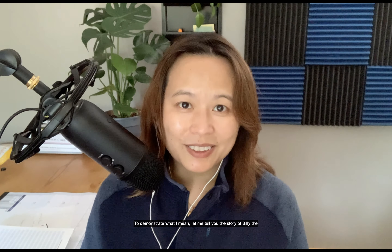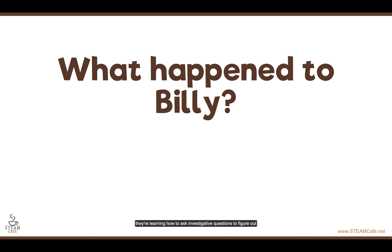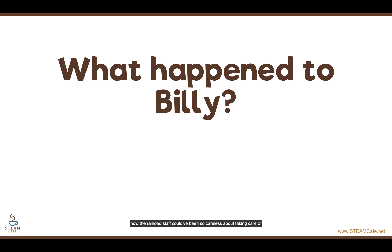I'm going to pause here because some of you are probably going, oh my gosh, what horrible thing happened to such a young kid? But it's not as bad as you think. First of all, this is a great activity to teach kids how to ask questions, which is, incidentally, one of the science and engineering practices. I have a book of lateral thinking puzzles similar to this one where you present a story, then ask your students what happened or why. Their job is to ask questions that I can answer with a yes or no to try and figure out the situation. In other words, they're learning how to ask investigative questions to figure out the context of the puzzle. The puzzle about Billy is like this, and I'm sure some of you are thinking that Billy didn't arrive home because something horrible happened to him, like he got kidnapped or something. You may also wonder how the railroad staff could have been so careless about taking care of a little kid.